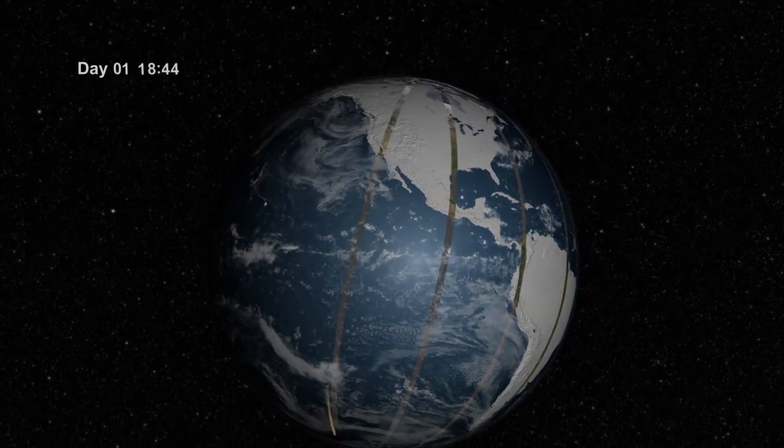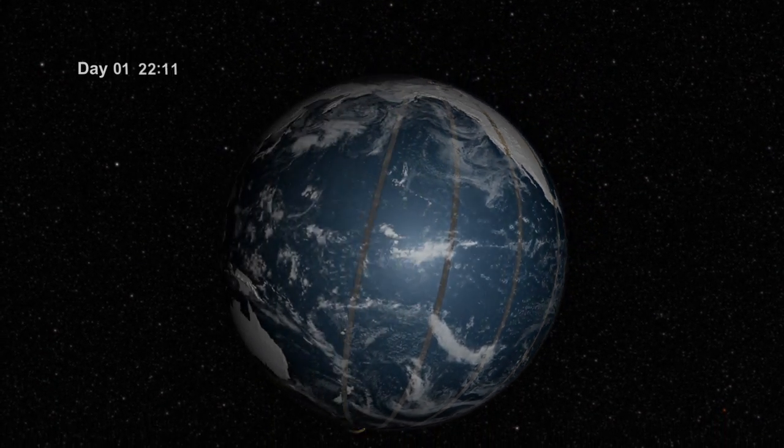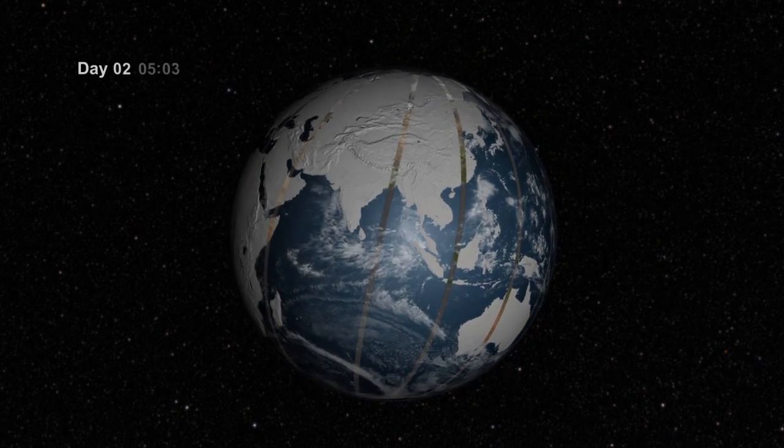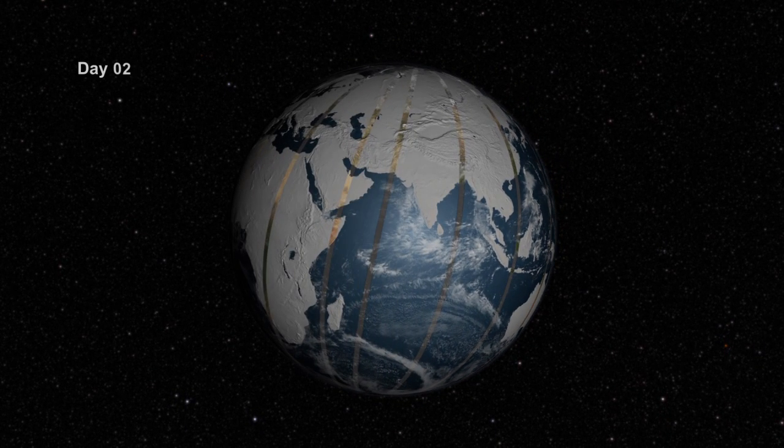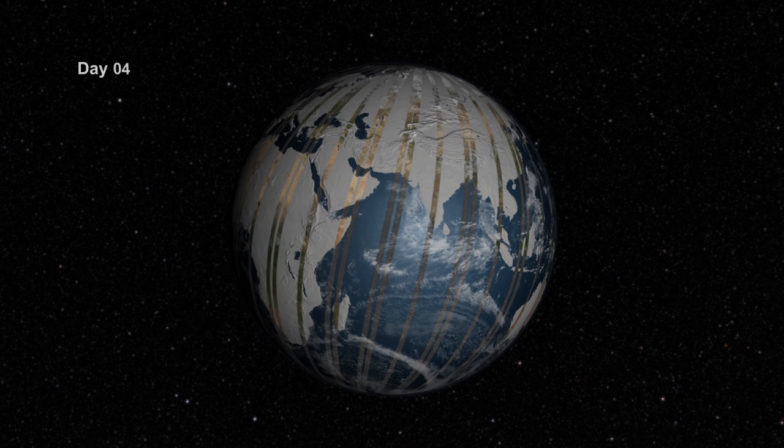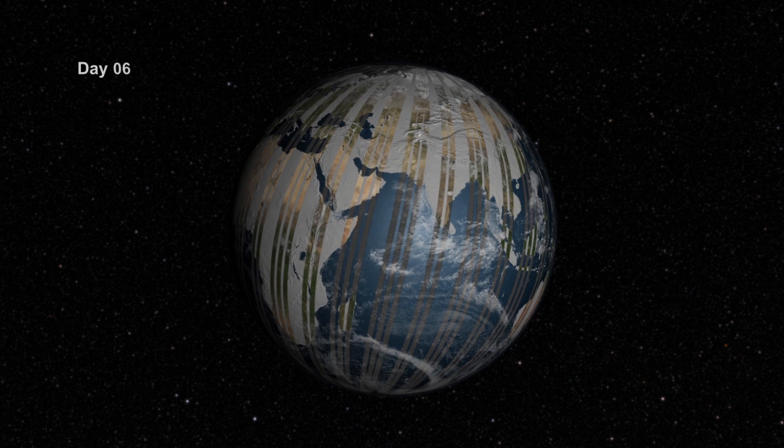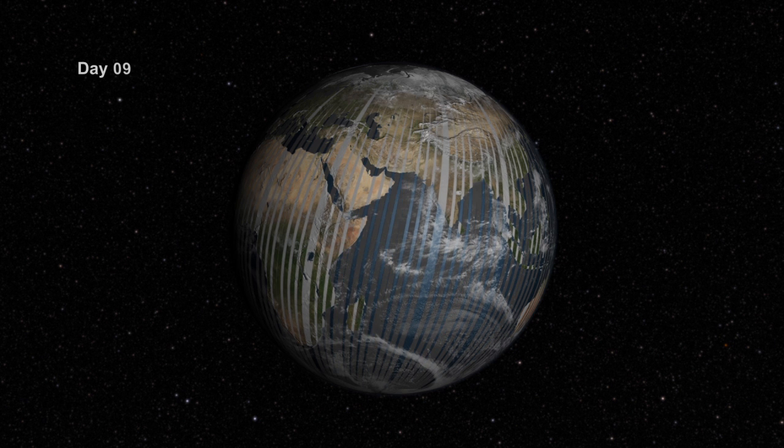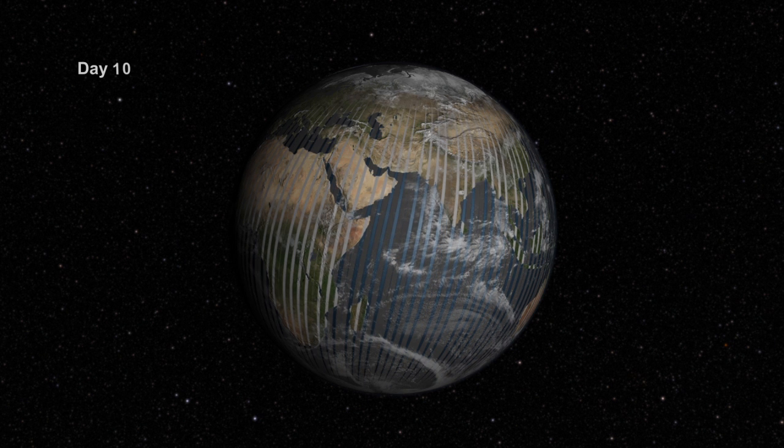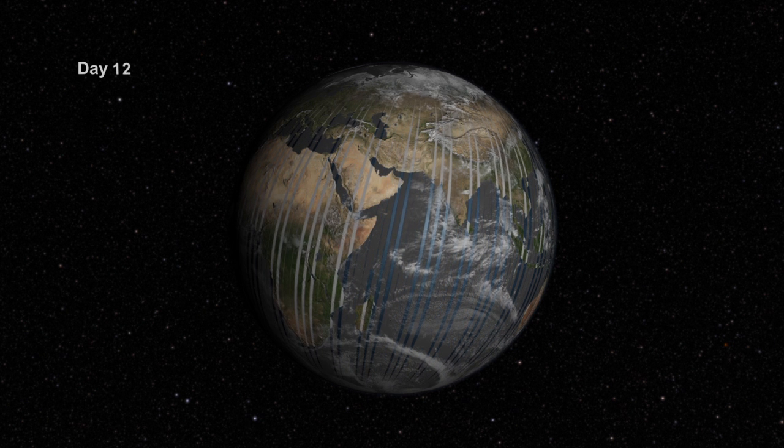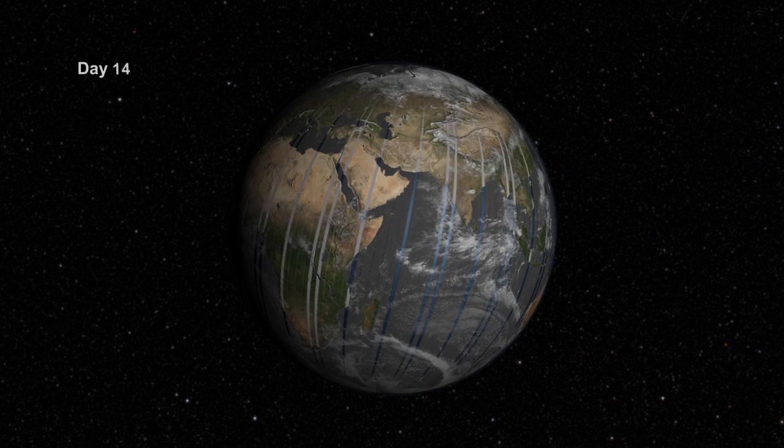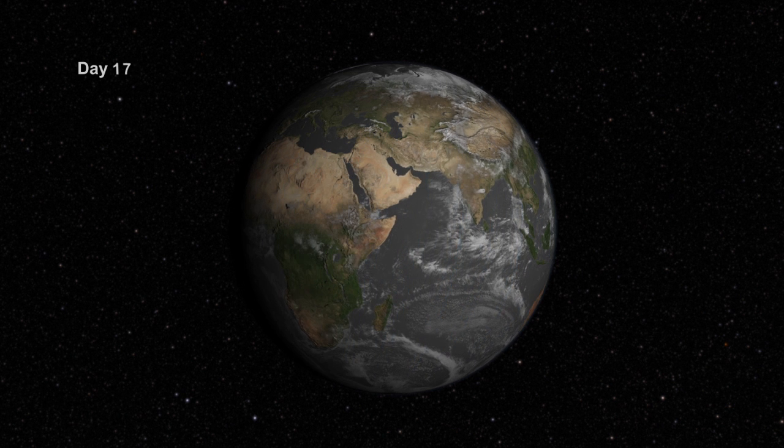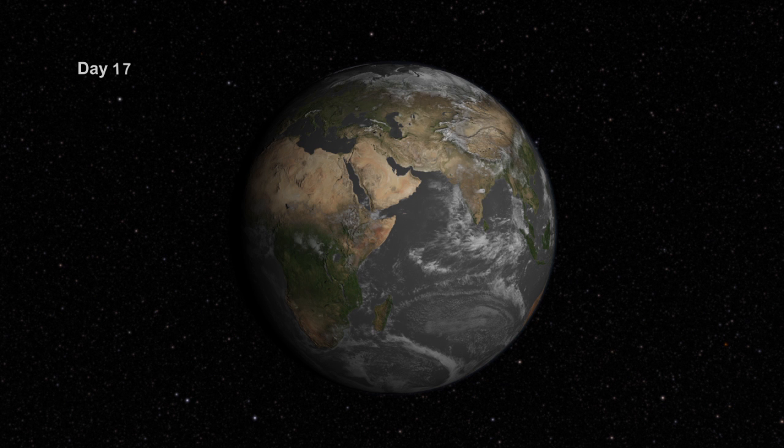One orbit takes about 99 minutes, so that's approximately 15 orbits in a 24-hour period. The orbits are maintained such that after 16 days the entire surface of the Earth has come within view of the Landsat instruments while sunlit, and then on day 17 the first ground path is repeated so we get to view the entire surface once every 16 days.